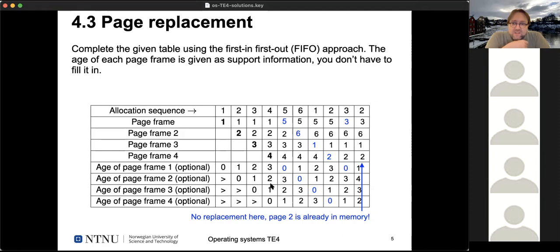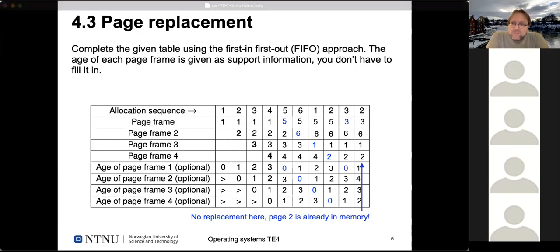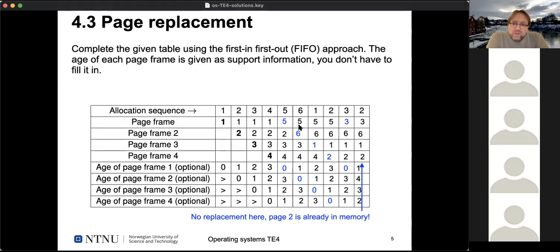For page number five: we look at the current ages at time four. Page frame one was brought in first and has the highest age, so we replace it with page five and reset its age to zero, increasing the others. Then there's a request for page six — we need to find the next oldest, which is now page frame two with age three (since page frame one was just reset to zero). We replace page frame two and store page six into it, resetting that age.